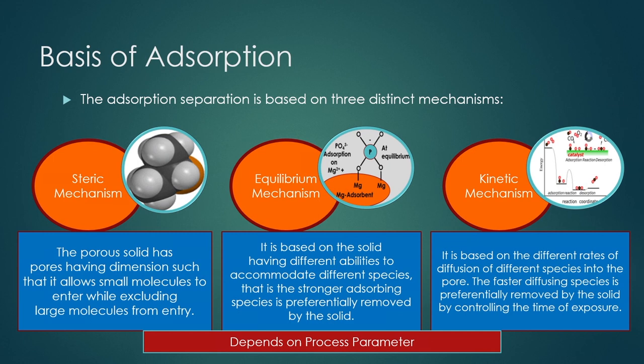In the case of steric mechanism, the porous solid has pore dimensions such that it allows small molecules to enter while excluding large molecules from entry. In the equilibrium mechanism, it is based on the solid having different abilities to accommodate species — the stronger adsorbing species is preferentially removed by the solid material based on adsorbing capability.